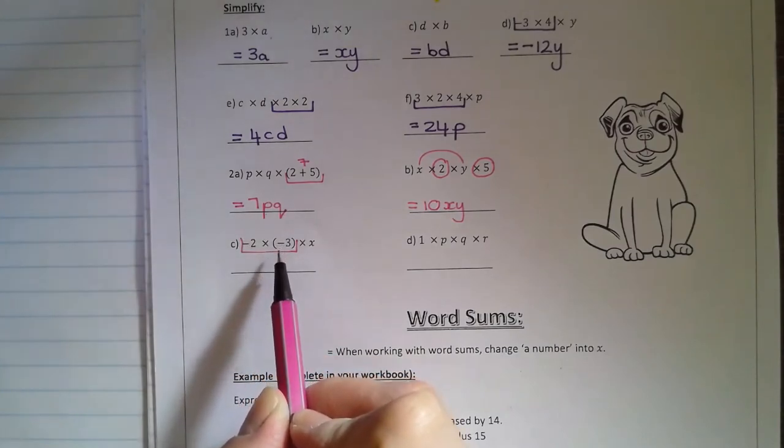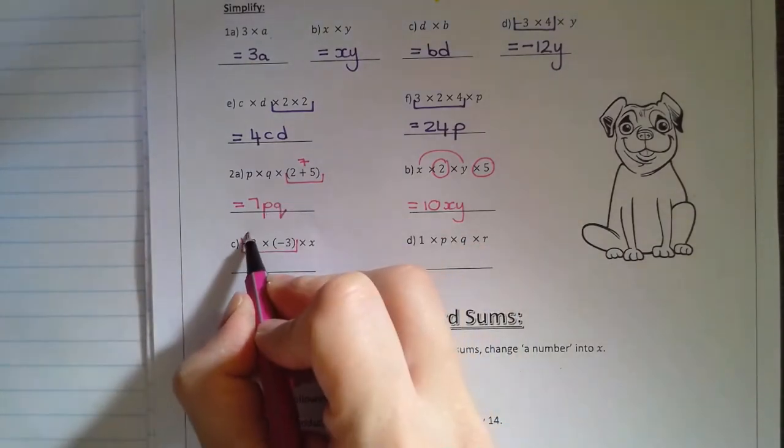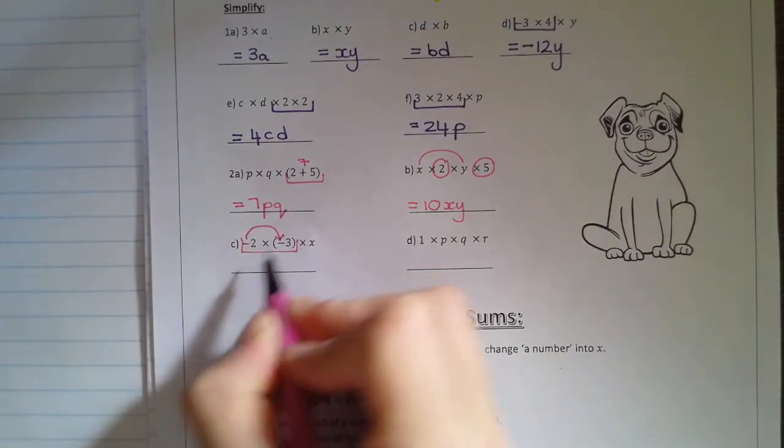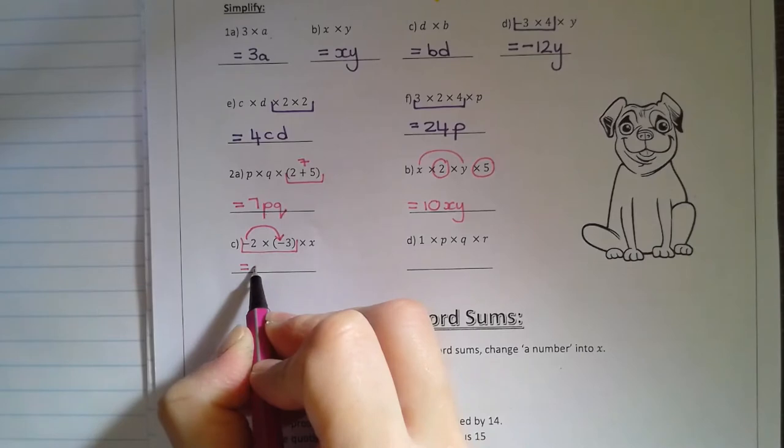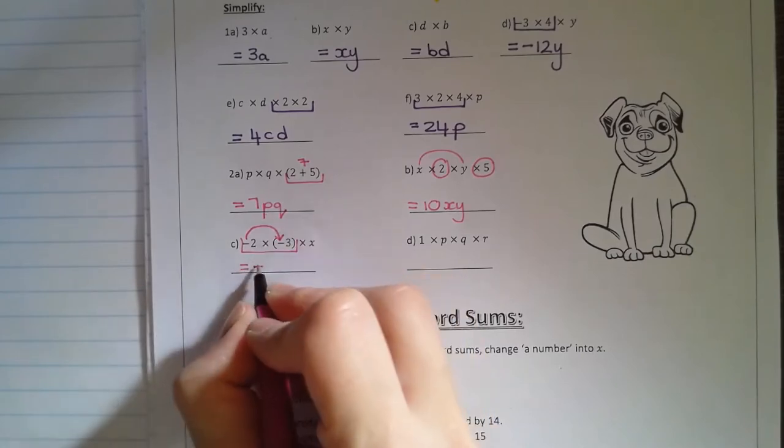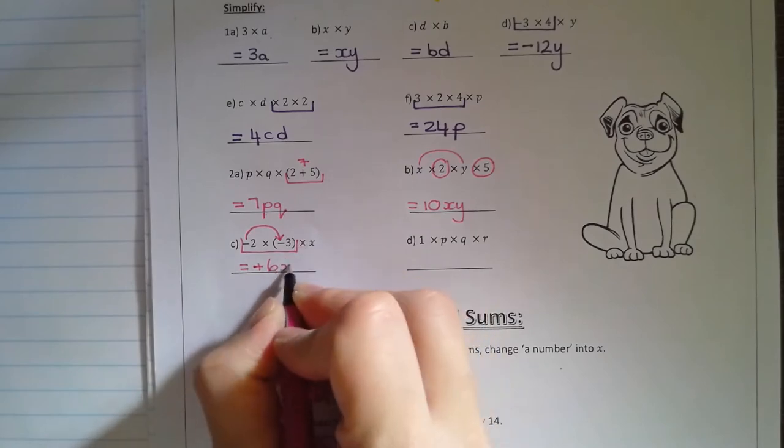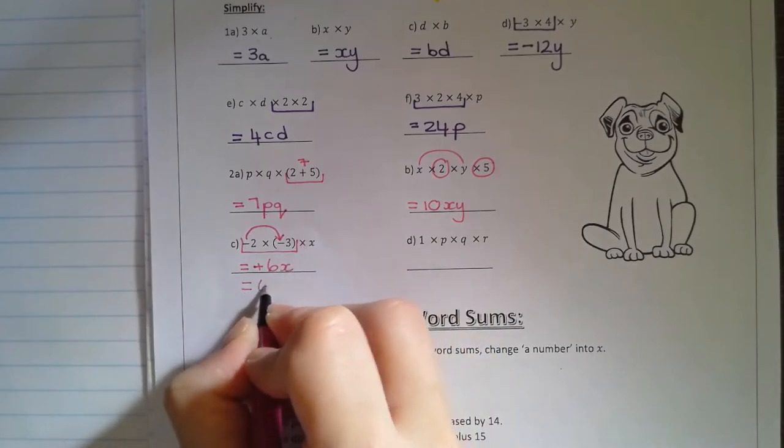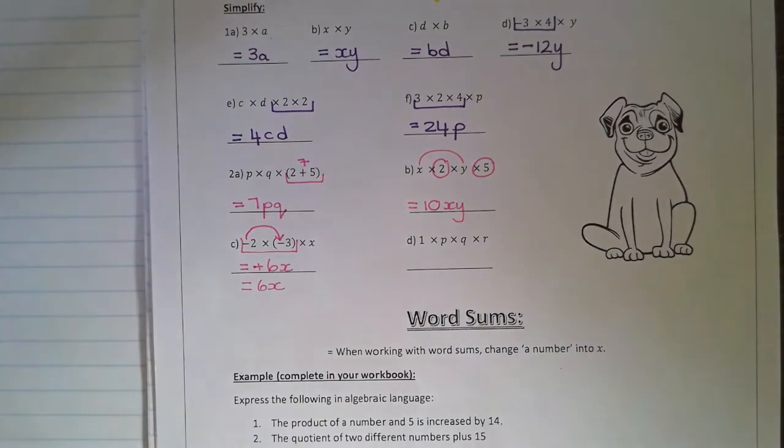If you're multiplying with negatives, you've got to apply the rule. Negative times negative gets us a positive. In this case, it is two times three is six. We get rid of the times sign. We don't write the positive there. We can leave it as 6X.